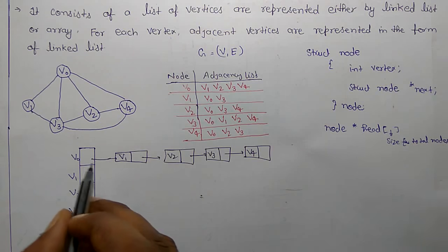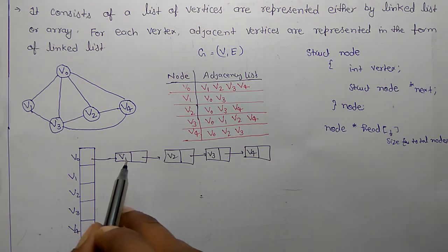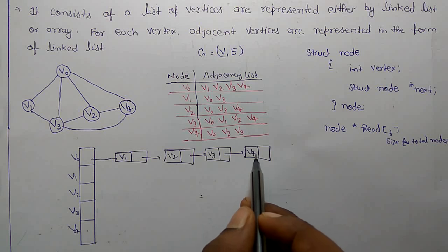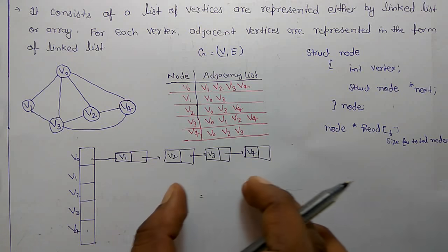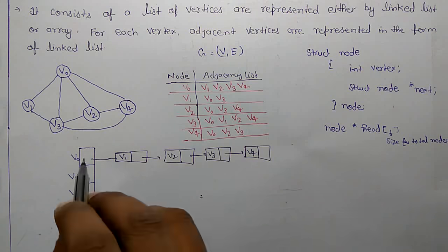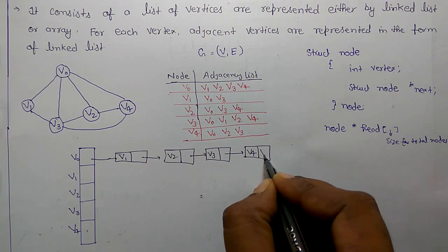So V0 vertex has adjacent vertices V1, V2, V3 and V4. There are not any other vertices for V0 adjacent vertices, so the last is null.